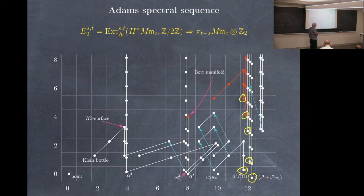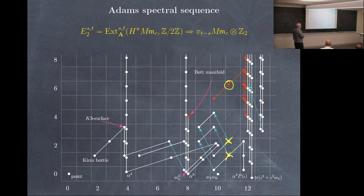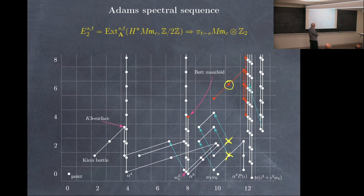The Adams spectral sequence E₂ term is computed from the cohomology of the relevant Thom spectrum using the Steenrod algebra. The six dots in dimension 12 represent the six generators. Some generators come from lower-dimensional manifolds via products — for example, K3 cross HP², and various products with the Bott manifold (shown in red, reproduced from lower dimensions by taking products). For the 11-dimensional bordism group relevant to trivializations, the E₂ term has three dots, which might suggest a larger group, but differentials (blue arrows) reduce it to just cyclic of order 2.